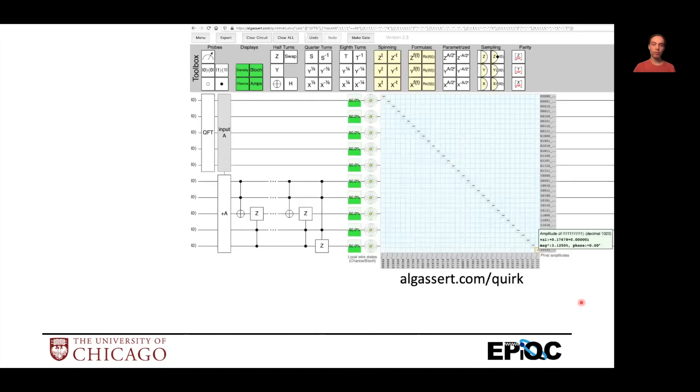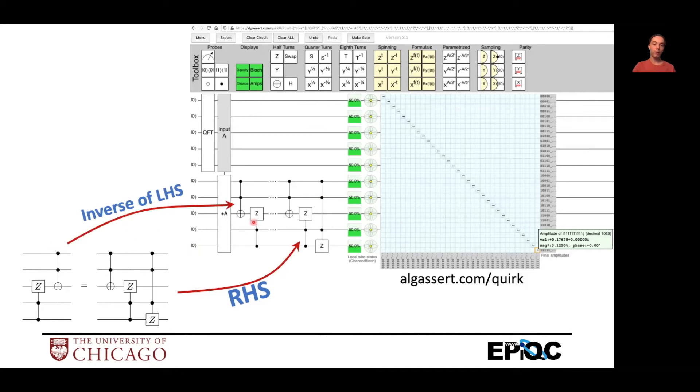One method that I really like for finding, discovering some of the new identities or playing with this, is a tool called Quirk. Just a little web-based tool you can go to online. A trick to use this circuit simulator is to place these gates on the left-hand side, and then put the right-hand side of your identity here, the left-hand side of your identity, the inverse of it here. And then if this output matrix here is the identity matrix, then this identity is true. If it's not, then there's something wrong with identity. You can move gates around in real time and play around with it and see if you find any new identities.